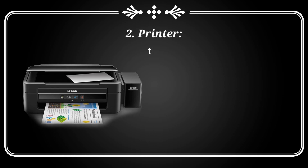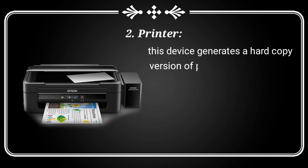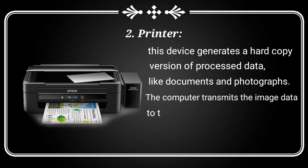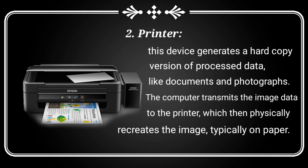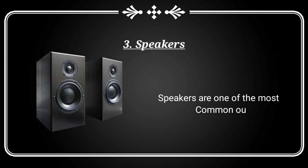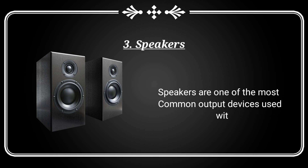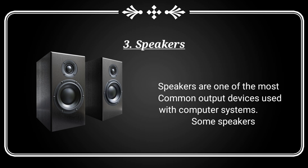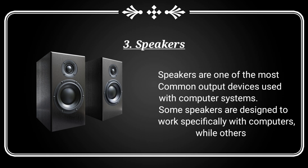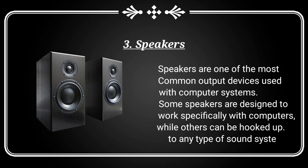Printer — this device generates a hard copy version of processed data, like documents and photographs. The computer transmits the image data to the printer, which then physically recreates the image, typically on paper. Speakers — speakers are one of the most common output devices used with computer systems. Some speakers are designed to work specifically with computers, while others can be hooked up to any type of sound system.